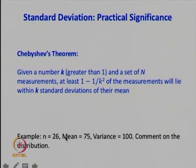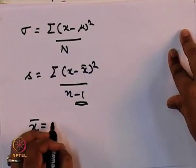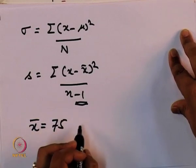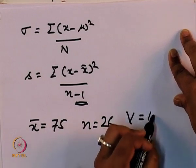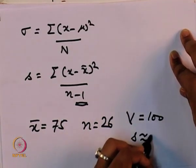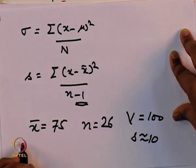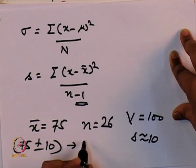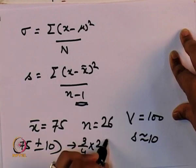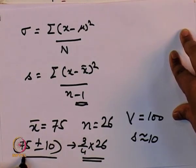As an example, you have N equal to 26, mean is 75, variance is 100. So x-bar is 75, N is 26, variance is 100, which means S is approximately equal to 10. Within 75 plus or minus 10, you have three-fourths of the population — that is, three-fourths of the variables will lie within the range 65 to 85.